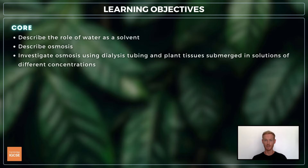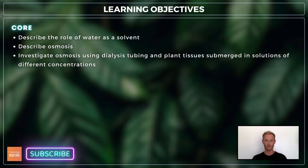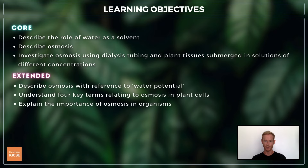For topic 3.2 you need to be able to describe the role of water as a solvent in organisms, understand the term osmosis and how it applies to the movement of water into and out of cells, and investigate osmosis using dialysis tubing, plant tissues and solutions of different concentrations. For extended you also need to describe osmosis with reference to water potential, understand four terms relating to osmosis in plant cells, and explain the importance of water potential and osmosis in the uptake and loss of water by organisms.